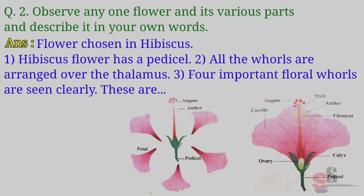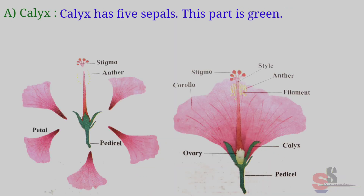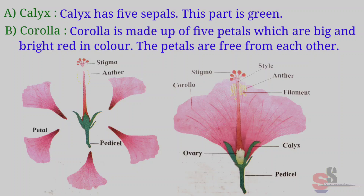Four important floral whorls are seen clearly. These are: Calyx — Calyx has five sepals; this part is green. Corolla — Corolla is made up of five petals which are big and bright red in color. The petals are free from each other.